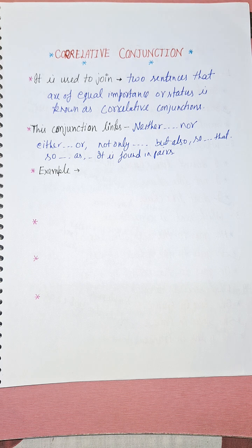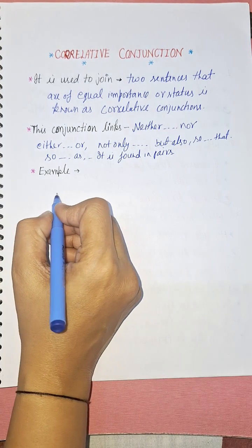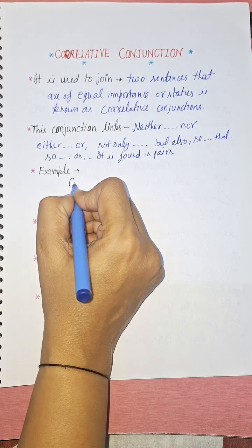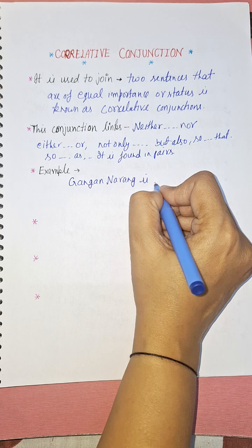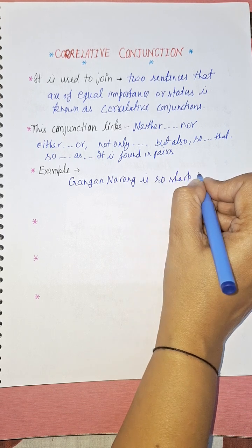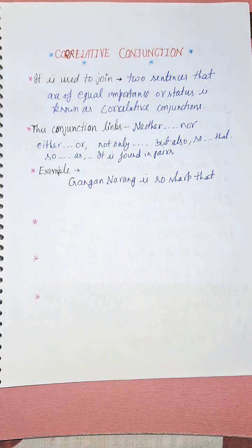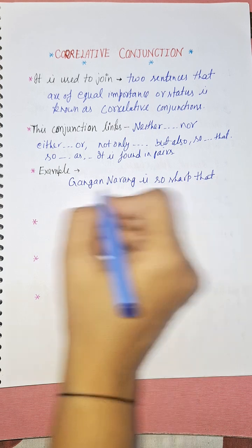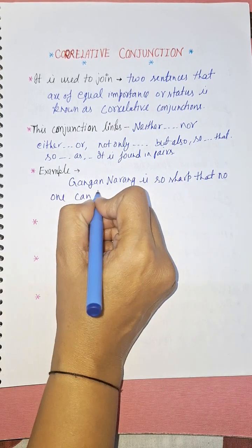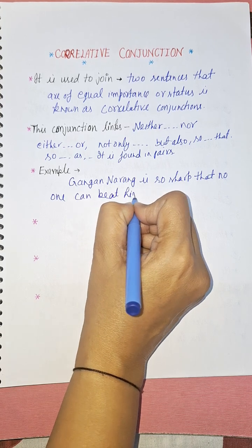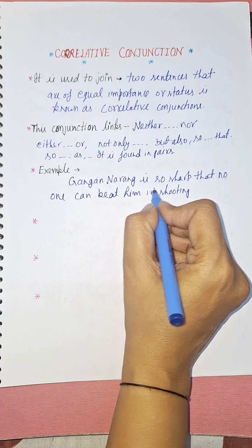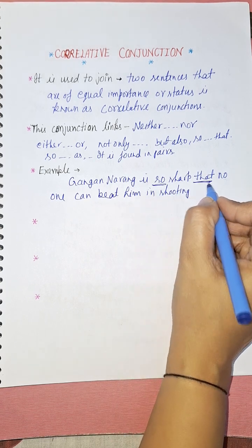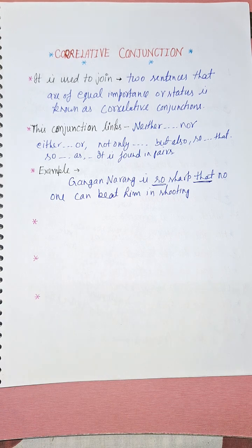Let's look at some more examples. Gagan Narang is so sharp that no one can beat him in shooting. Here the words 'so' and 'that' are in a pair, which is how you can identify it as a correlative conjunction.